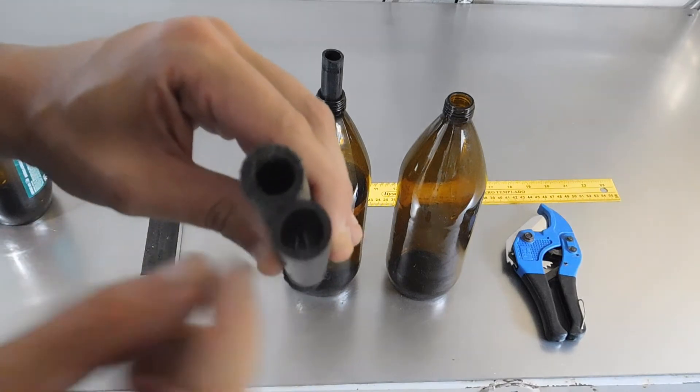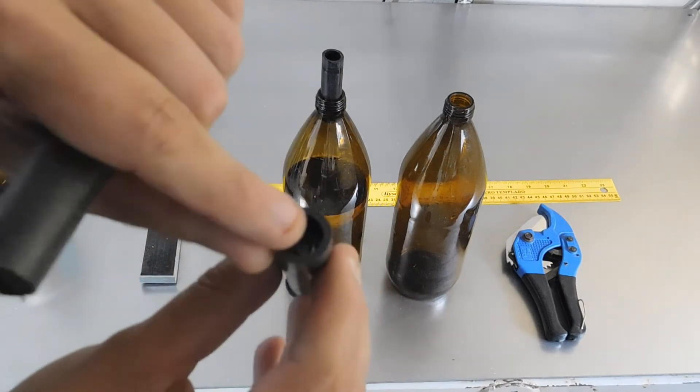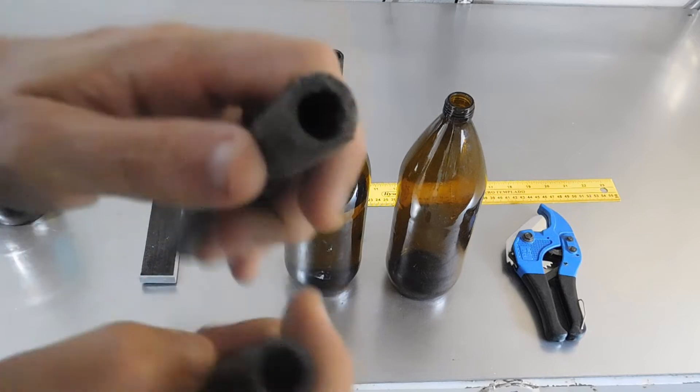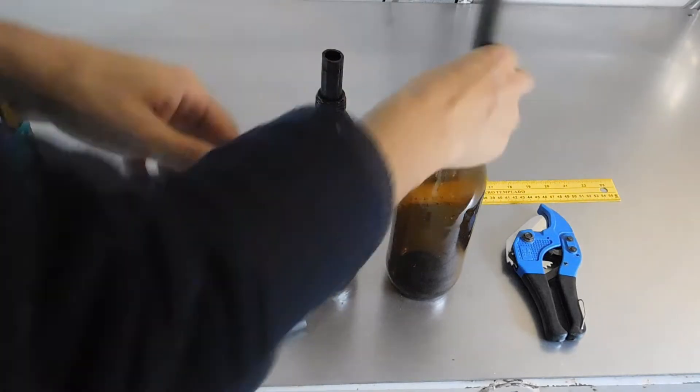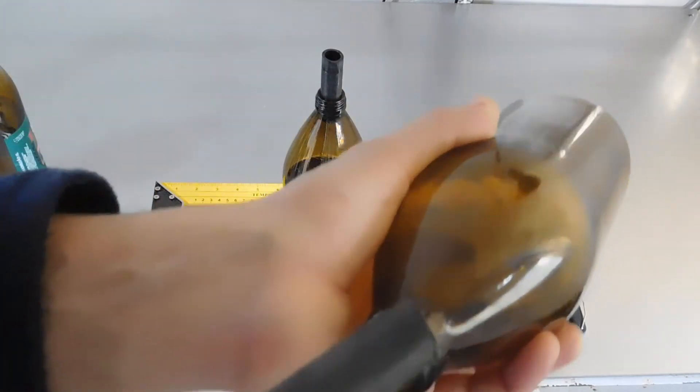Aquí pueden ver, por ejemplo, tengo estos dos caños. Este es un poquito más fino. Este es un poquito más grueso. Y este caño un poquito más grueso tiene que calzar perfectamente aquí.